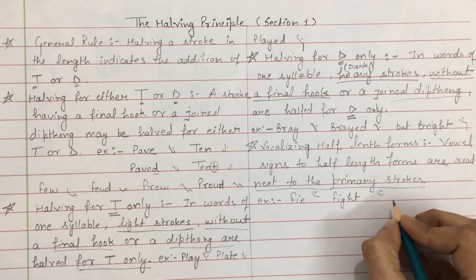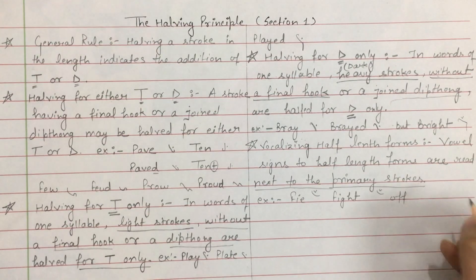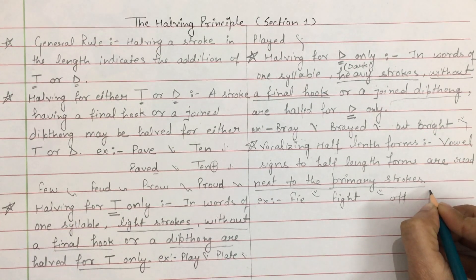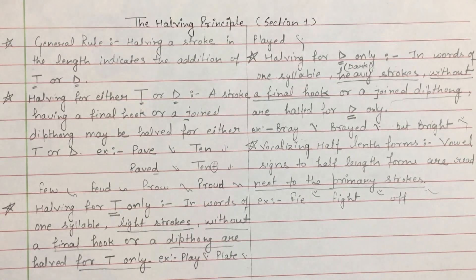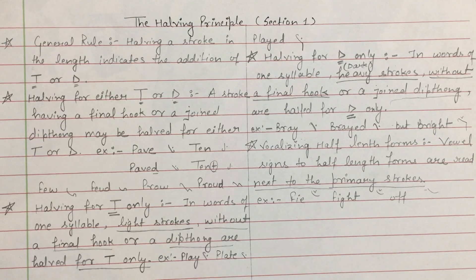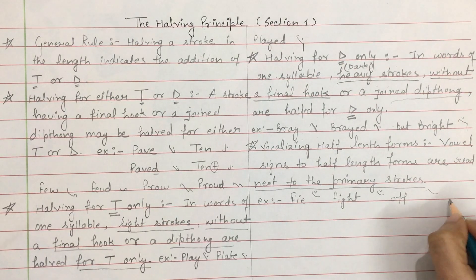अगर लिखना है word 'off' — above the line F and O के vowel को place करेंगे। But अगर लिखना है word 'oft' — F को half करते हुए लिखेंगे।